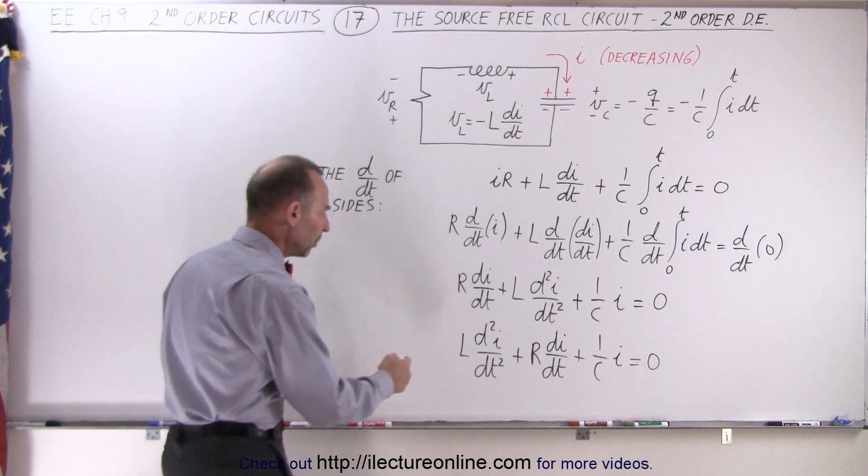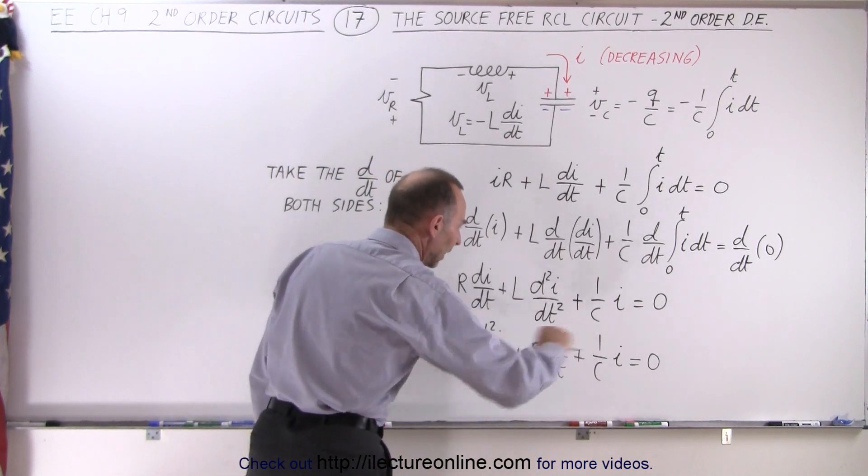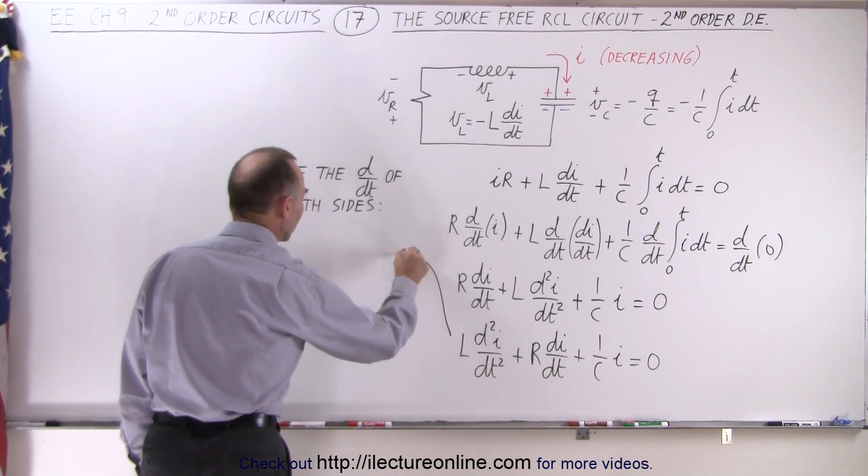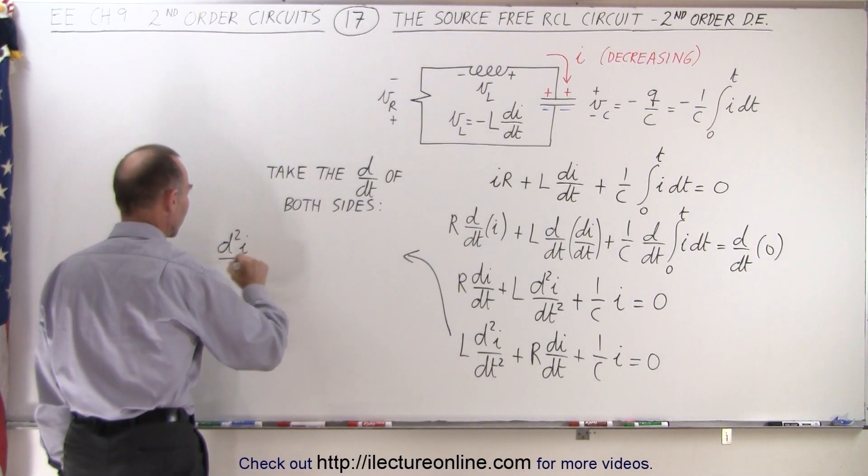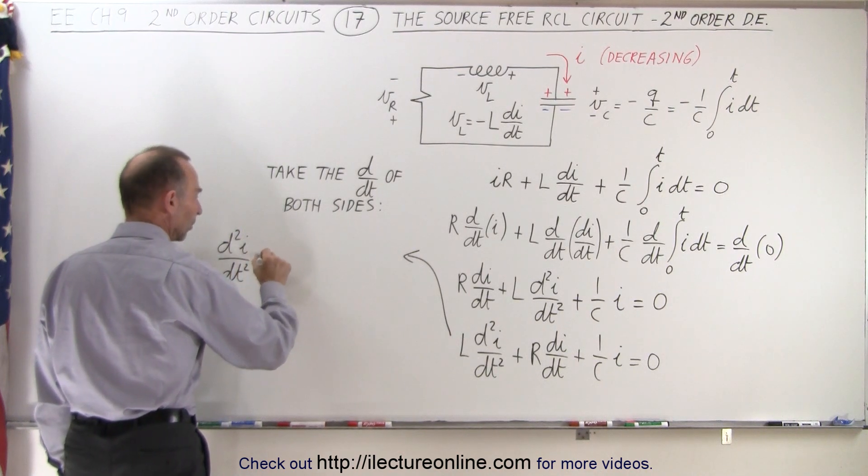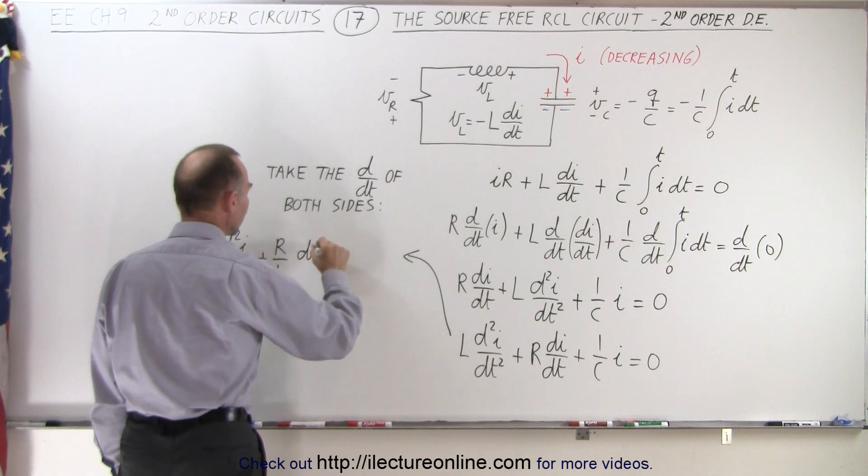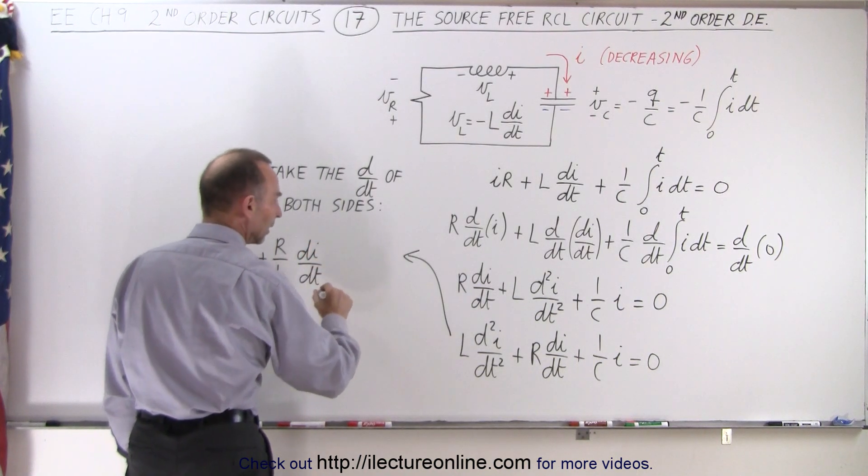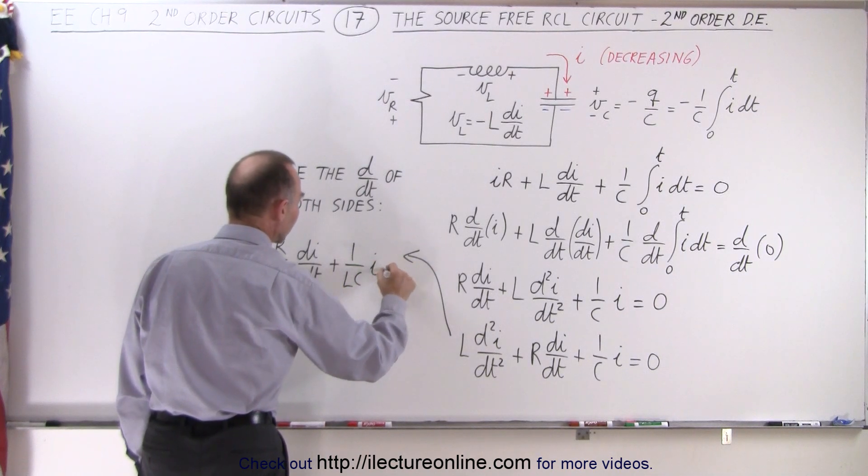The next thing we want to do is get rid of the L, so we're going to divide everything in the equation by L. We get the second derivative of I with respect to time, plus R over L times dI/dt, plus 1 over LC times I equals zero.